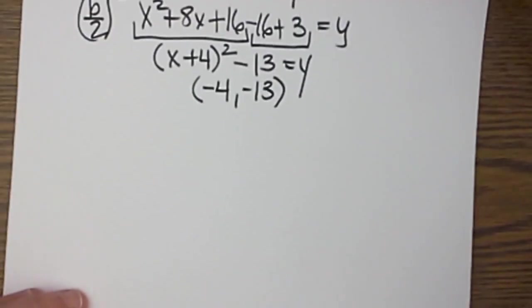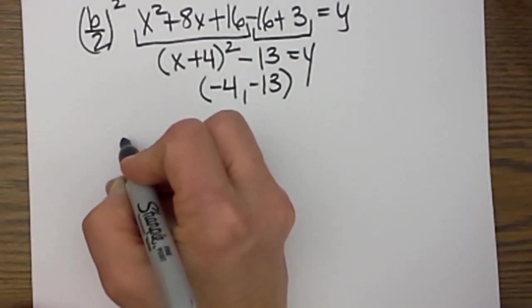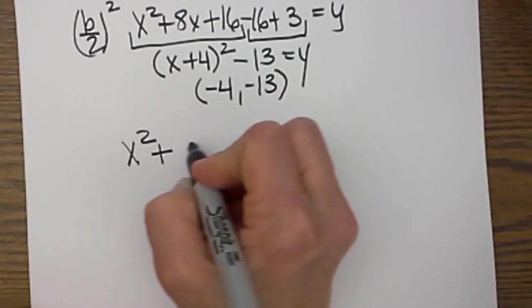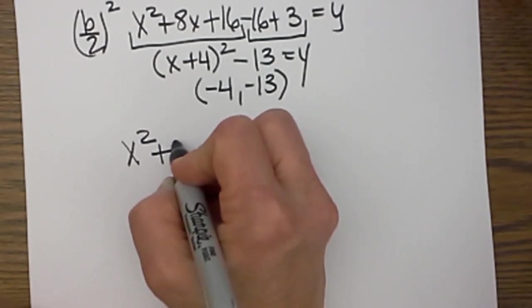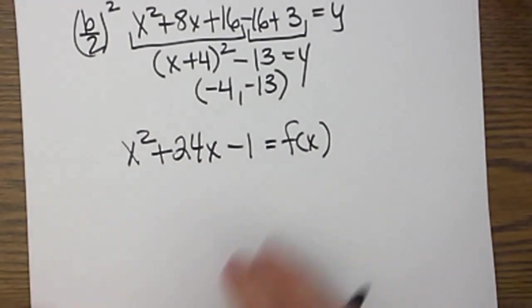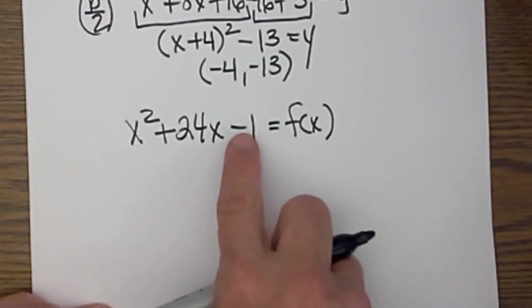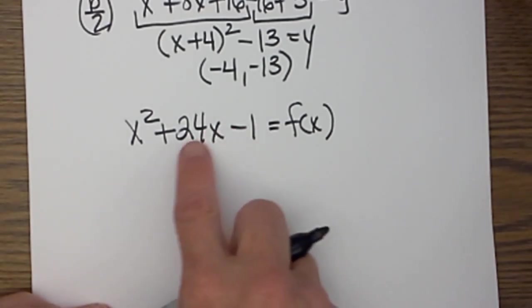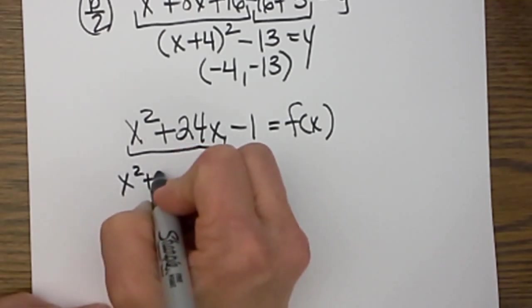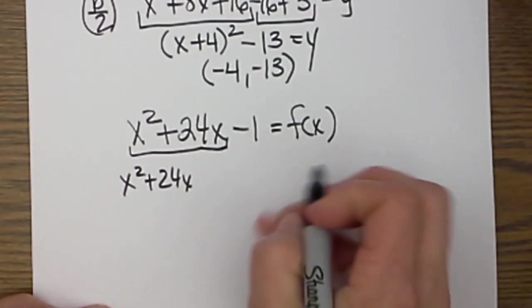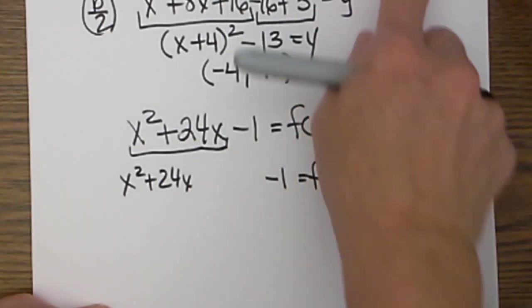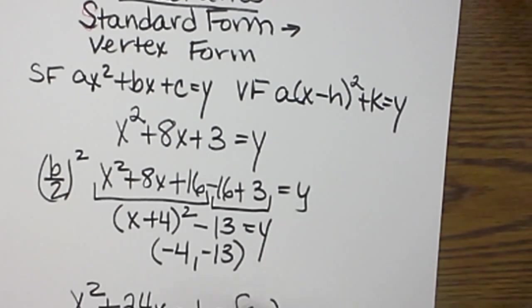Let's try one more of those so you can see the pattern here. Let's try another lead coefficient of 1: x² + 24x - 1 = f(x). Now we are going to slide this one over because that is not the right number we need for completing the square, and we are going to group the x's together—x² and 24x. Then we are going to push the one over, and that one is going to become part of my k value. It is part of this constant on the outside.